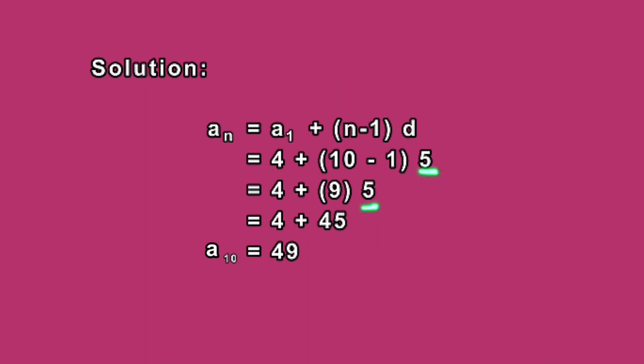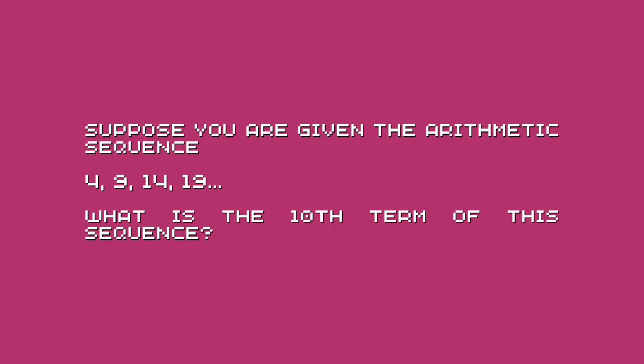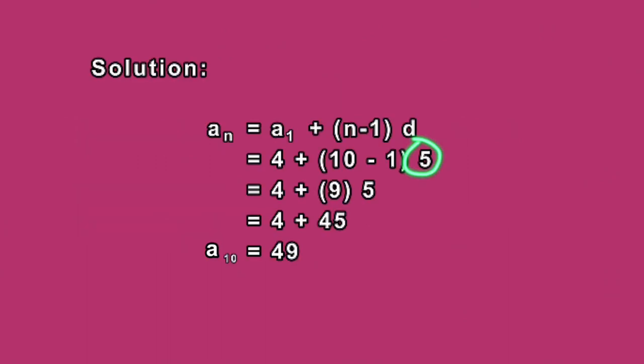We can easily find the common difference by subtracting two terms of the sequence, and in our case, we will be subtracting 9 by 4. 9 minus 4 is 5. Now, let us first solve the numbers inside the parentheses. So 10 minus 1 is equal to 9, then multiply by 5 is equal to 45, and then add 4, we have 49. And therefore, the 10th term of the sequence 4, 9, 14, 19, is equal to 49.